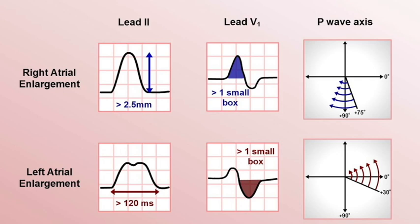Also assess for atrial enlargement. Left atrial enlargement shows an M-shaped (bifid) P wave in lead two greater than 0.12 seconds, and a biphasic P wave in V1 with a larger terminal component. This occurs because the SA node depolarizes right atrium first, and an enlarged left atrium takes longer to depolarize. Right atrial enlargement shows tall P waves in lead two greater than 3mm and a biphasic P wave in V1 with a larger initial component.